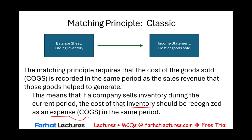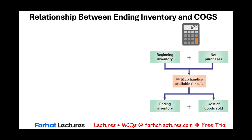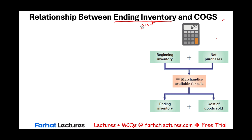This means if a company sells inventory during the current period, the cost of the inventory should be recognized as an expense through cost of goods sold in the same period. The other very important concept I want you to understand today is the relationship between ending inventory, which is an asset, and cost of goods sold, which is an expense. I'm going to work a simple example that illustrates this relationship.